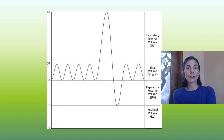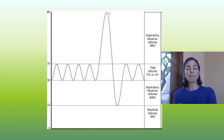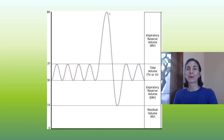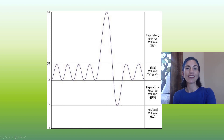In spirometry, one of the parameters measured is called vital capacity. Vital capacity is the maximum amount of air that you could move in one breathing cycle. To measure it, you take in as much air as you possibly could and then blow out as much as you possibly could, measuring how much air you actually exhaled. You go all the way up to the top of your inspiratory reserve volume and push all the air out, and that collectively is your vital capacity.